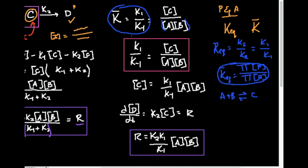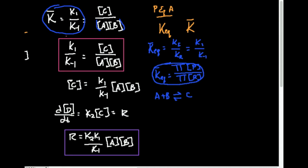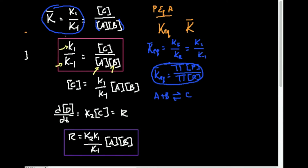One similarity to the steady state approximation: I want to solve for the concentration of the intermediate C, because I can't measure it directly. But if I can get it in terms of things I know — like k1, k-minus-1, A, and B — then I don't need to know its concentration. Multiplying both sides of the equilibrium expression by [A][B], I get that the concentration of C equals k1 over k-minus-1 times the concentration of A times the concentration of B.